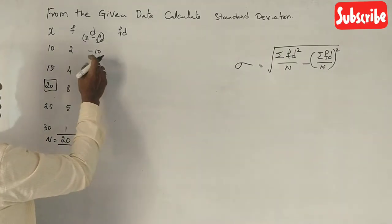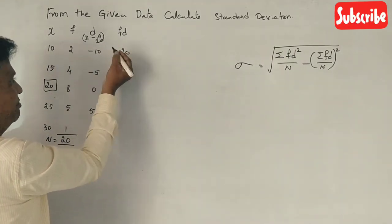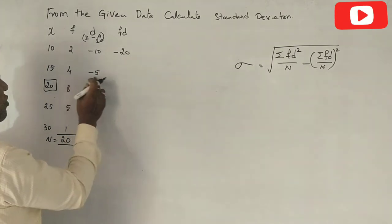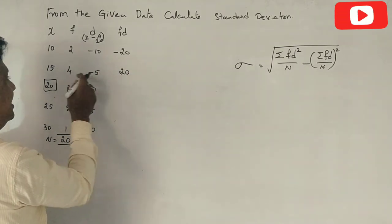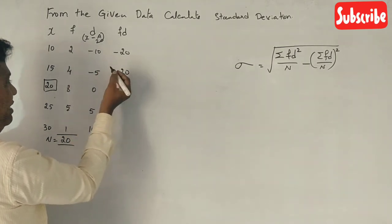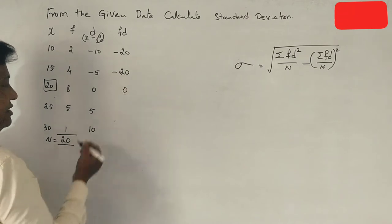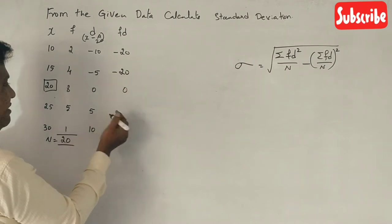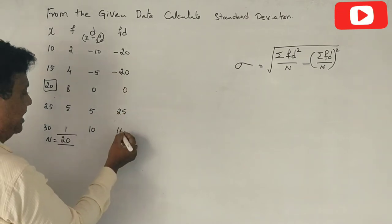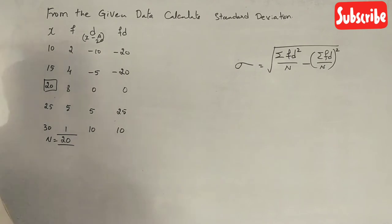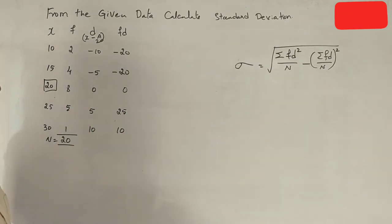2 into 10 is 20. Plus into minus is minus, 4 fives are 20. Plus into minus is minus. 8 into 0 is 0. 5 fives are 25. 1 into 10 is 10. The answer for fd is 10.